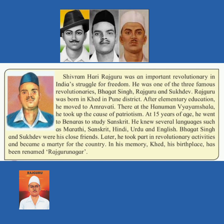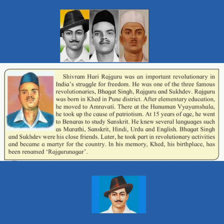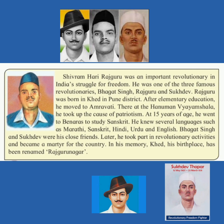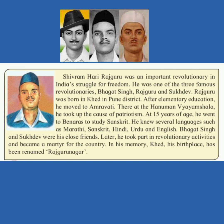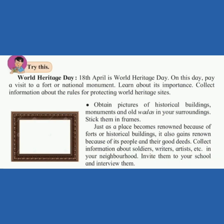He knew several languages such as Marathi, Sanskrit, Hindi, Urdu and English. Bhagat Singh and Sukhdev were his close friends. Later, he took part in revolutionary activities and became a martyr for the country. In his memory, Khed, his birthplace, has been renamed Rajguru Nagar.